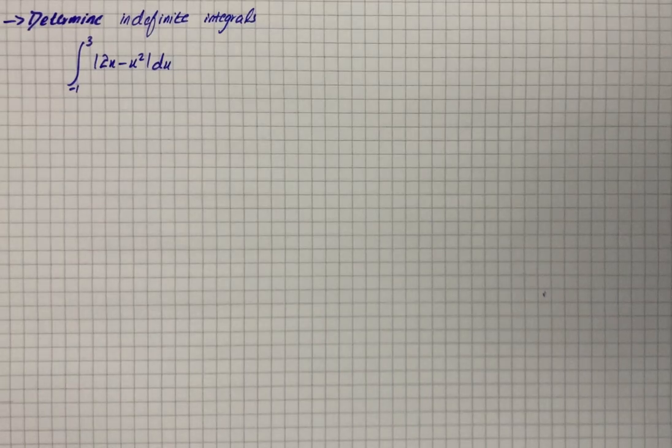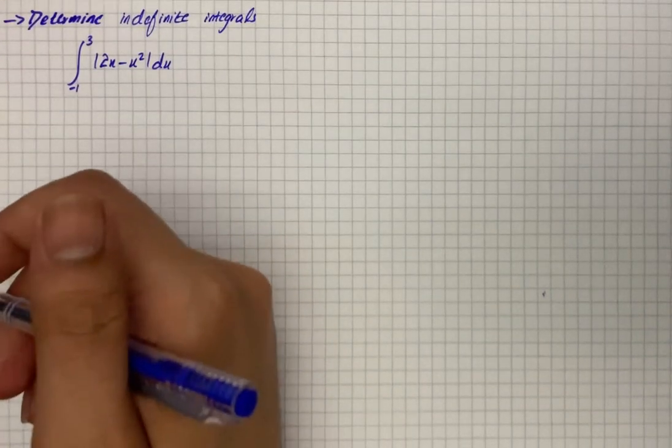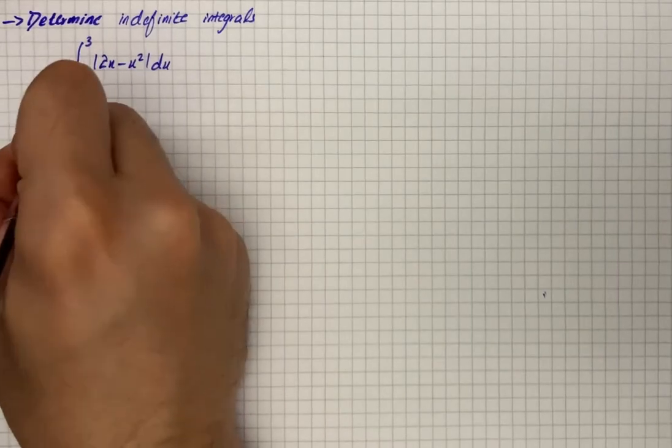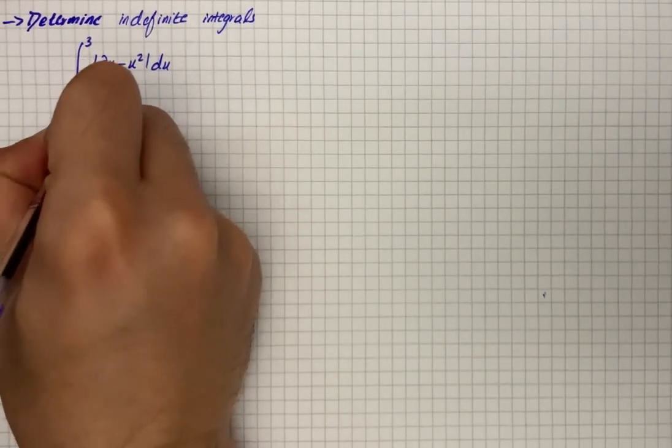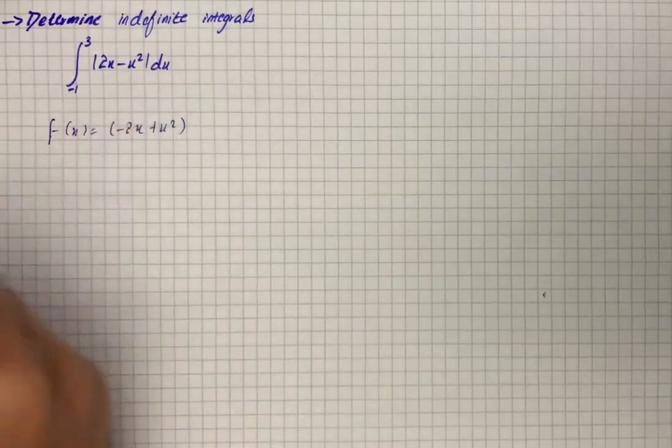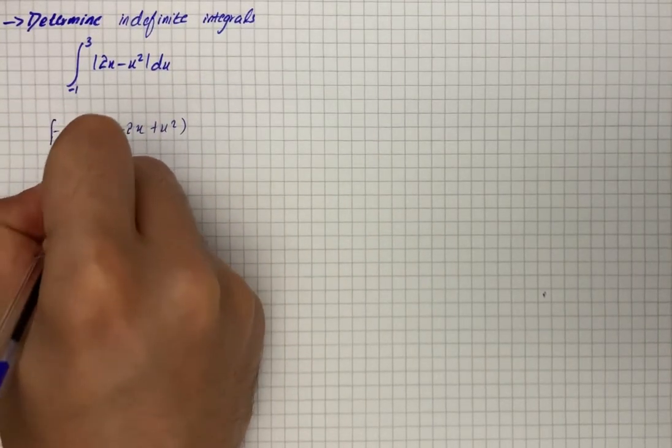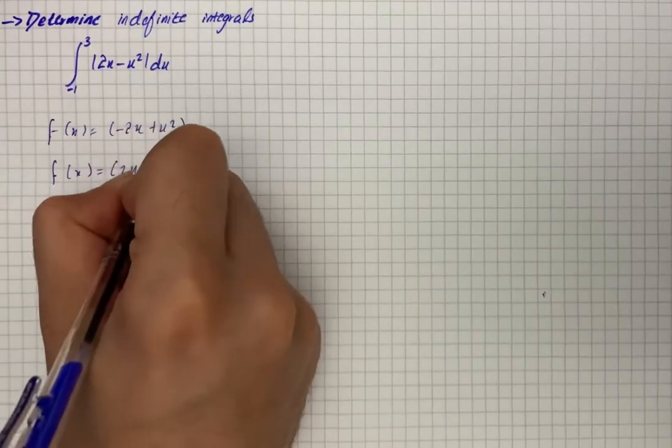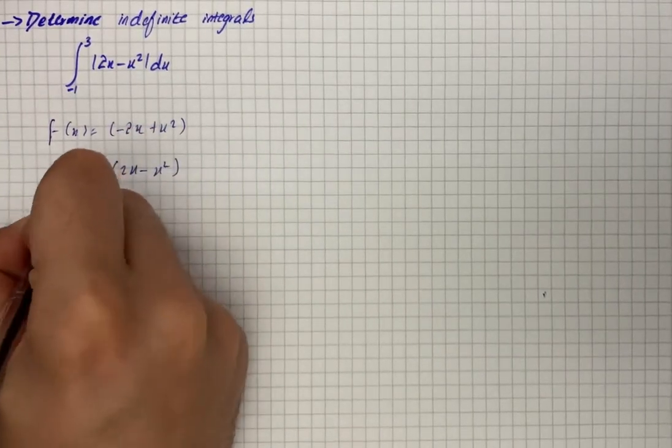Here we have to determine the indefinite integrals. So first of all we will eliminate the absolute value. We write f(x) is equal to minus 2x plus x squared, and then we write f(x) equals to 2x minus x squared.